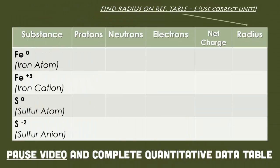Now we're going to fill in this chart. Remember, the protons, neutrons, and electrons from the last video can be calculated using the reference tables. Then the net charge, which you look at in the top right corner of these symbols. For the radius, you have to use reference table S. For the elements that have a zero charge, write down the radius that you see. For the elements that have a positive or negative charge, assume whether or not they get bigger or smaller than that number. Pause the video and complete the quantitative data.